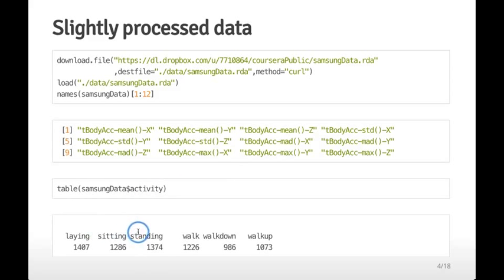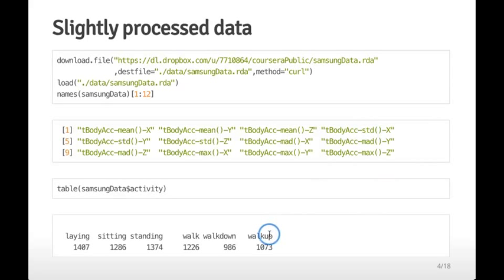The dataset also has a variable called 'activity' that tells you what the subject was doing during the study — laying, sitting, standing, walking, or walking up and down stairs. The activities are roughly equally distributed. What we're trying to do is use Samsung Galaxy S3 measurements to predict what activity the person is performing, something now widely used in medical studies and elsewhere.